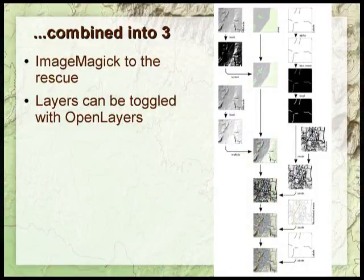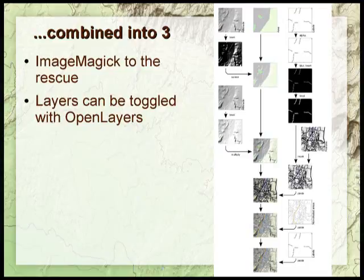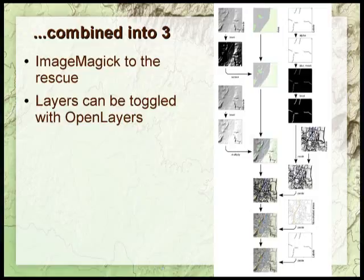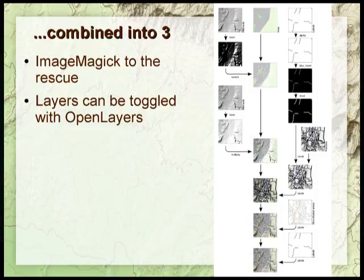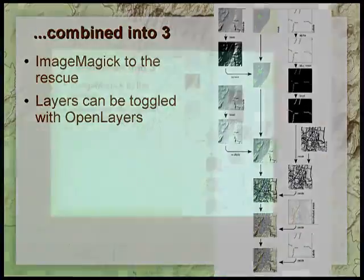All those layers are combined into three actual layers that I display with OpenLayers. I use ImageMagick to do that final merging. It's not just overlaying the layers — I do different things with them. Some tweak the color of an underlying layer, some are used as masks to cut other layers. It's a whole big process, and this is again from the wiki showing the previous version — it's even more steps now. This shows the steps I'm going through with ImageMagick to combine all these layers in various ways. All of this is on the wiki.